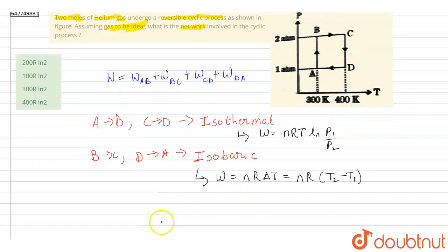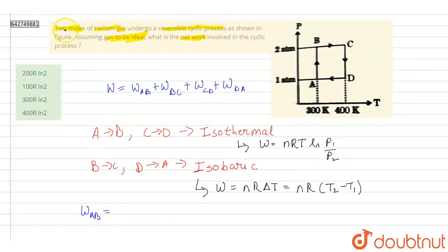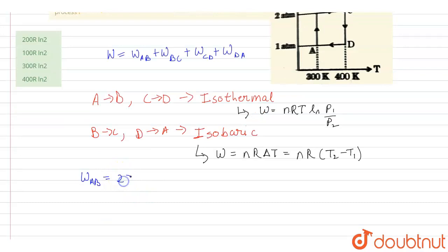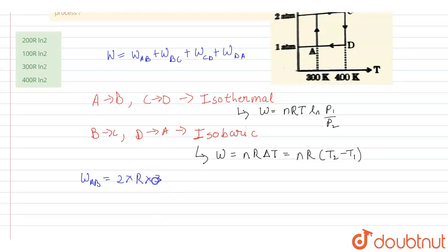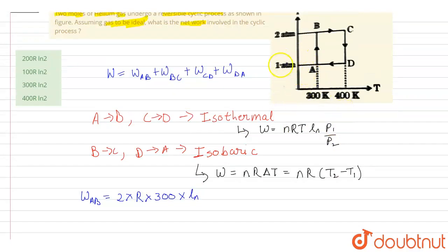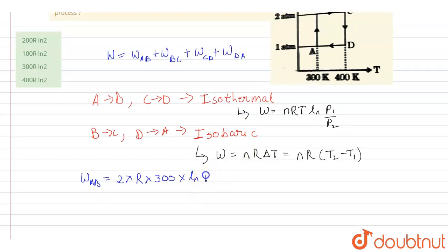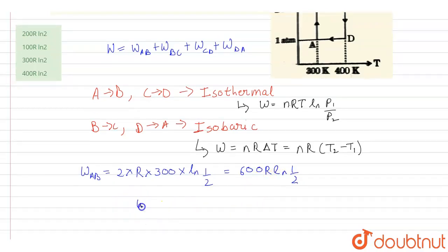Work done from A to B: this is an isothermal process, so W_AB = nRT ln(P1/P2). With n = 2 moles, T = 300 K, and P1/P2 = 1/2, we get W_AB = 2 × R × 300 × ln(1/2) = 600R ln(1/2) = −600R ln 2.